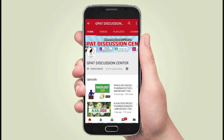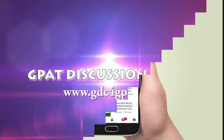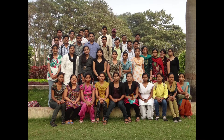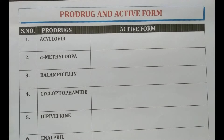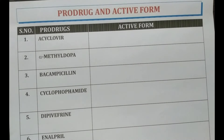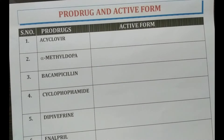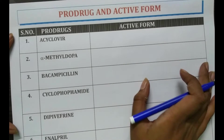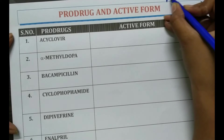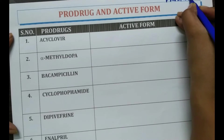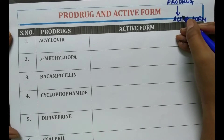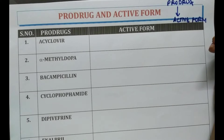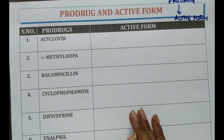Hello friends, subscribe to our channel GDC and press the bell icon for more updates. Hello Pharma aspirants, welcome to GDC channel. Today we will discuss about the prodrug and its active form. A prodrug is basically a compound or medication that after its administration into the body is converted into a pharmacologically active substance or its metabolite. A prodrug is converted into its active form after its metabolism when it is administered into the body. Let's discuss the prodrugs and their active forms.